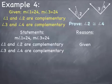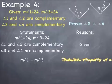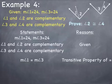Either starting place is okay, but looking at the first two statements — measure of angle 1 equals 24 and measure of angle 3 equals 24 — I'll say the measure of angle 1 equals the measure of angle 3. The reason is that they are both set equal to 24, and I can use the transitive property of equality to drop out the 24 and set the measure of angle 1 equal to the measure of angle 3.